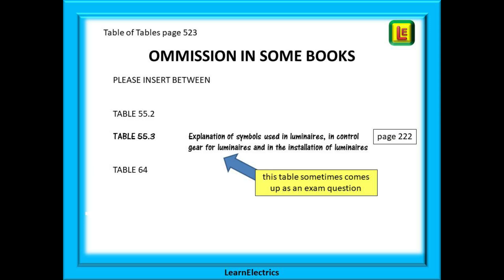Before we move on you need to check your own copy of the wiring regulations. On page 523 there is an omission in the table of tables in some books and you may need to refer to this table in the exam. Please insert the information as shown between table 55.2 and table 64.